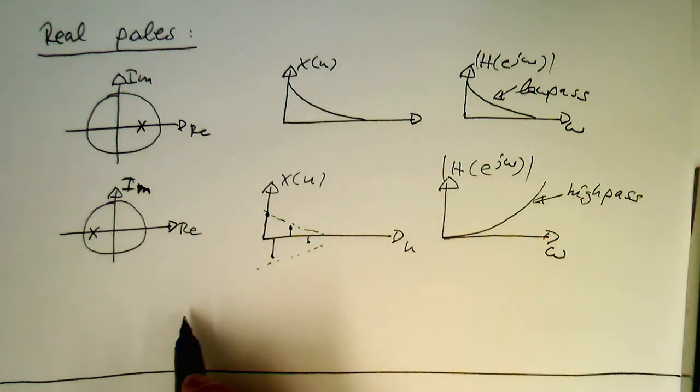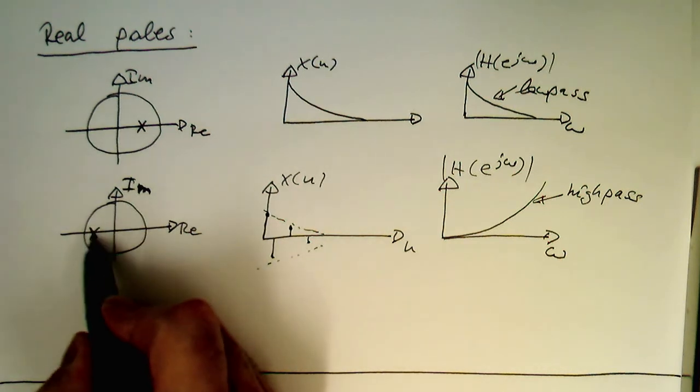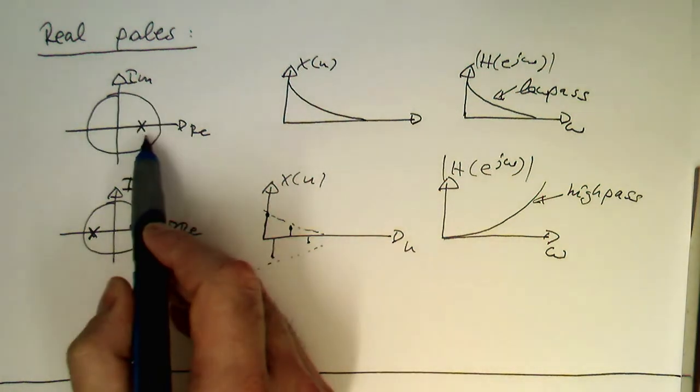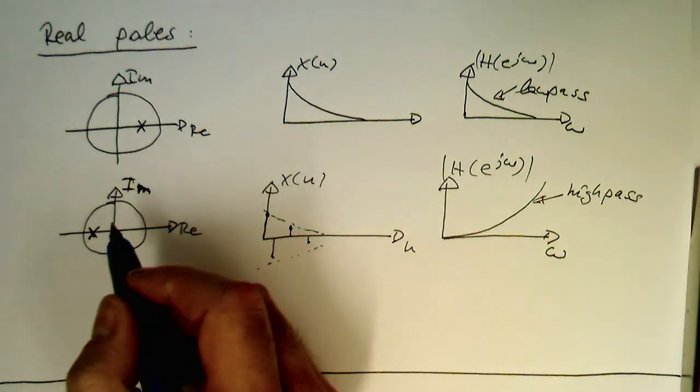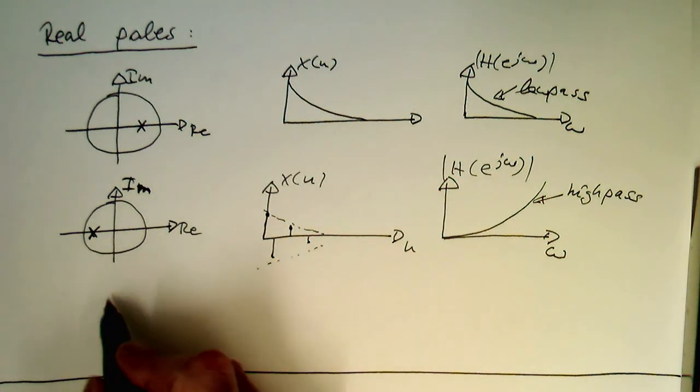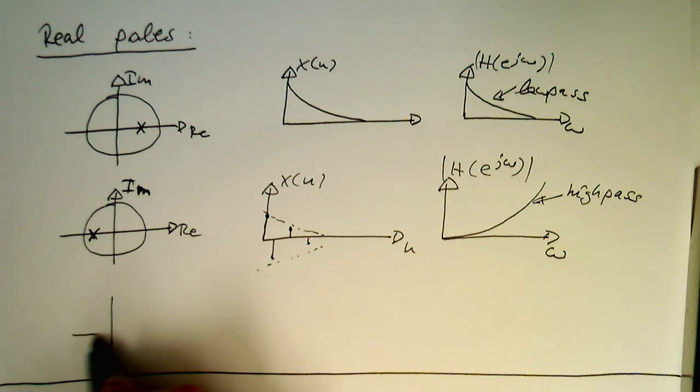That's a general observation in digital signal processing that if the pole sits on the left hand side it's usually a high pass and if it's sitting on the right hand side it's a low pass. So that's the interesting aspect of this.